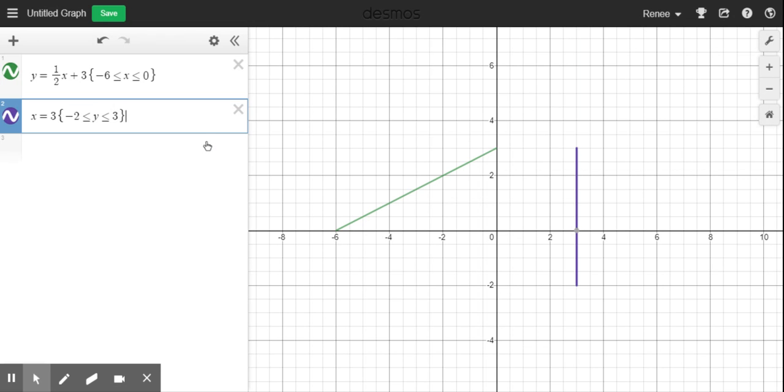And then I close out my bracket. So what that's doing is it's telling Desmos that I only want to look at this portion of the line that goes from my Y at negative two to my Y at positive three. So all it is showing me is a portion of that line.